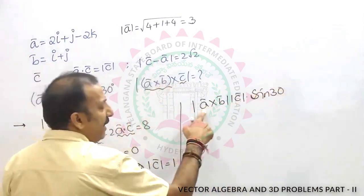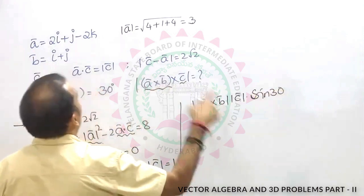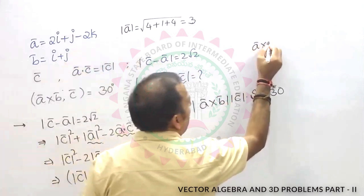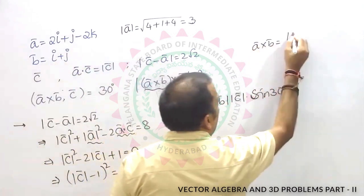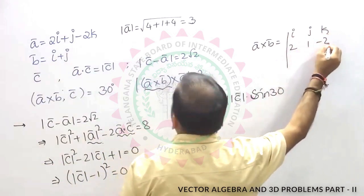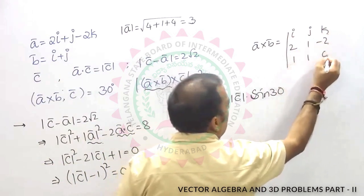A bar is given, b bar is also given. We can find out a cross b. What is a cross b? How to find? Determinant i, j, k, 2, 1 minus 2, 1, 1, 0.